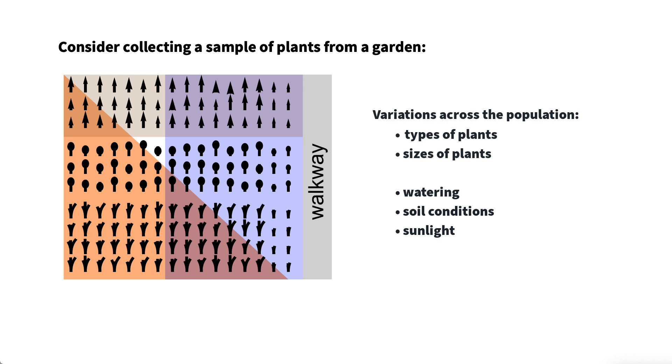To accurately represent the population, an ideal sample needs to include representative proportions of all of these variations. A sample where some type of plant or some growing condition or any group in the population is over-represented or under-represented is called a biased sample.